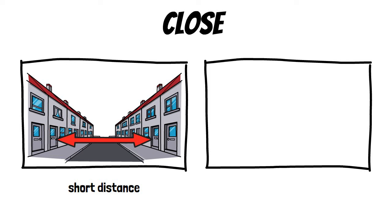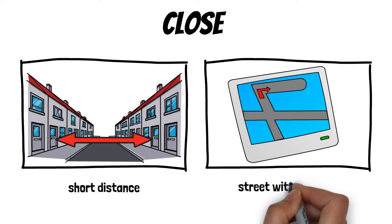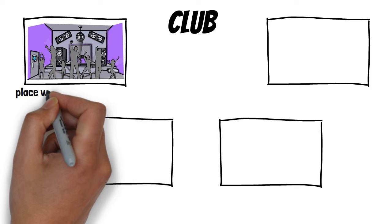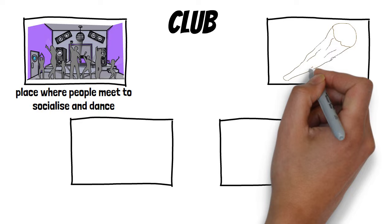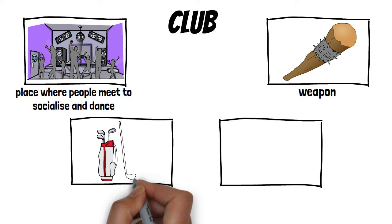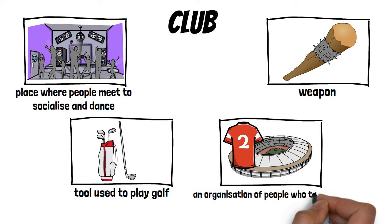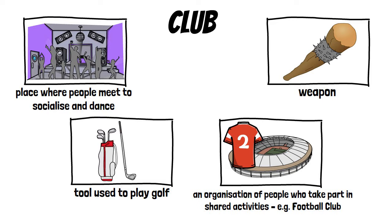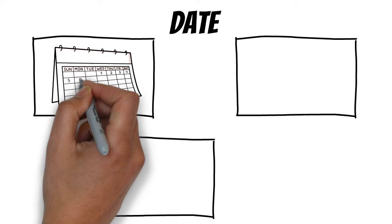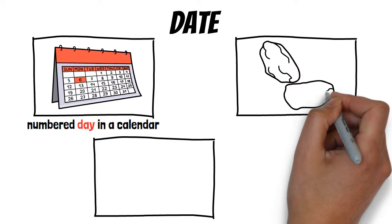Close: the first meaning is a short distance, and the second is a street with one exit. Club: the first meaning is a place where people meet to socialize and dance, the second is a weapon, the third is a tool used to play golf, and the fourth is an organization of people who take part in shared activities — for example, a football club.